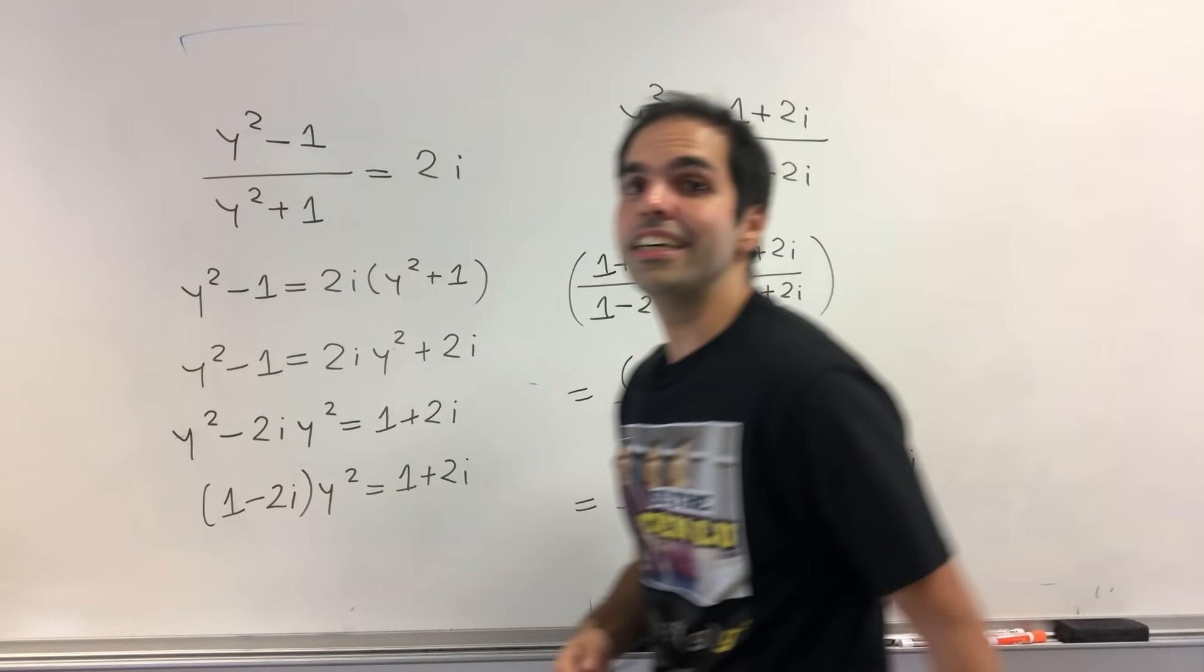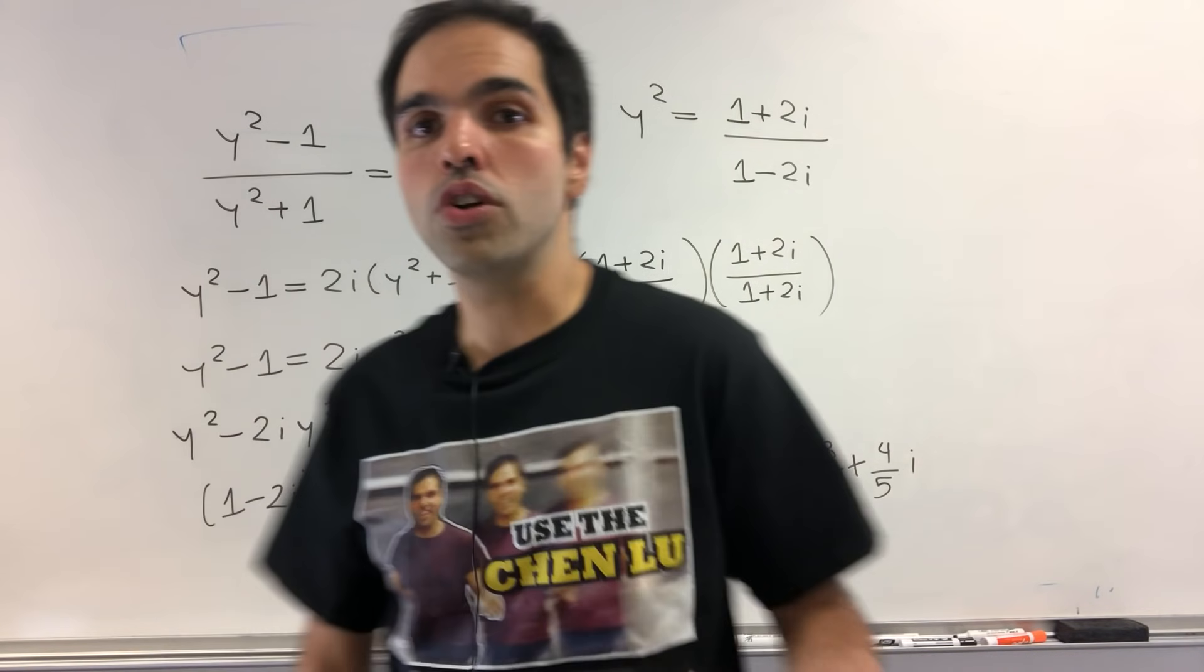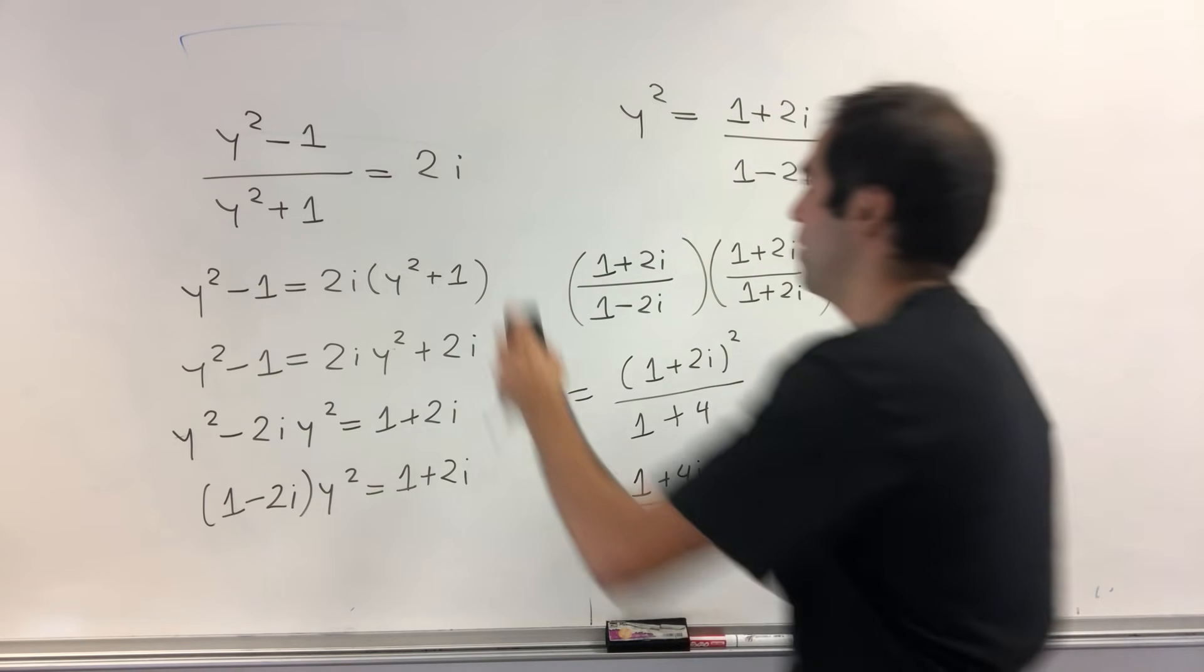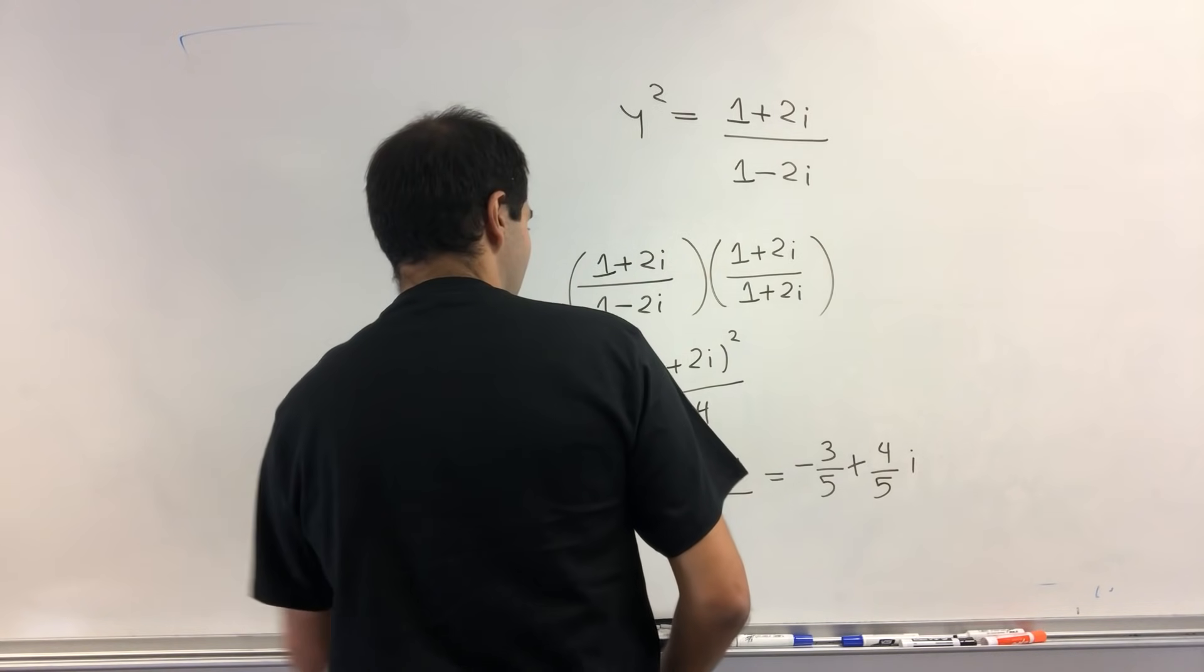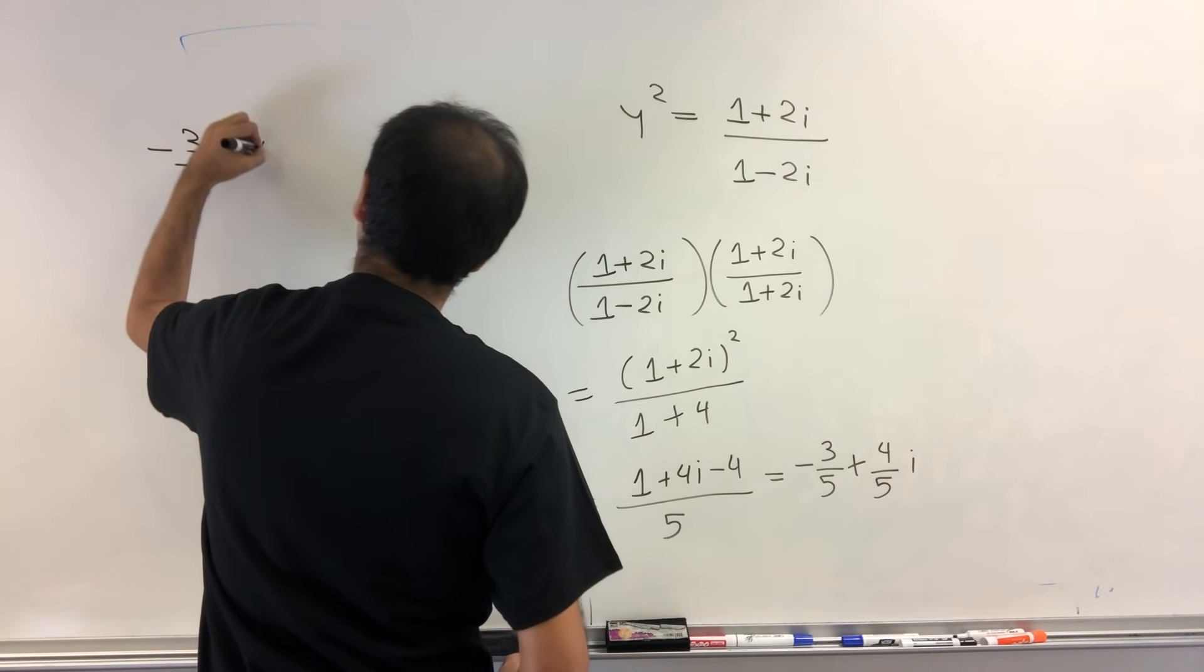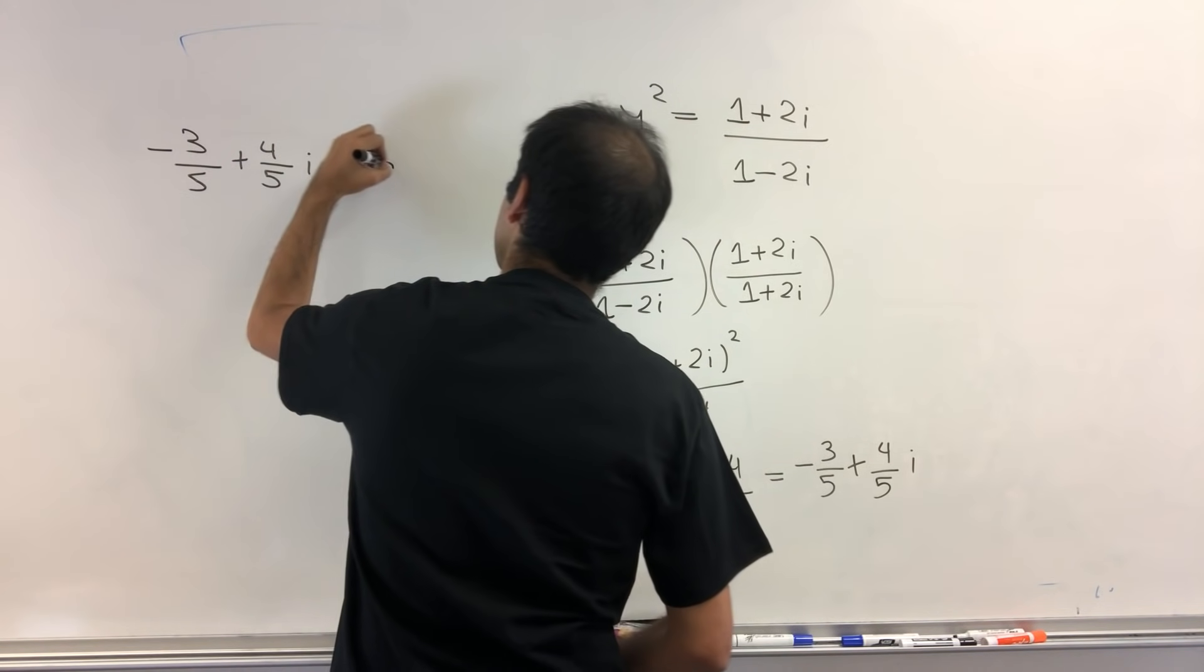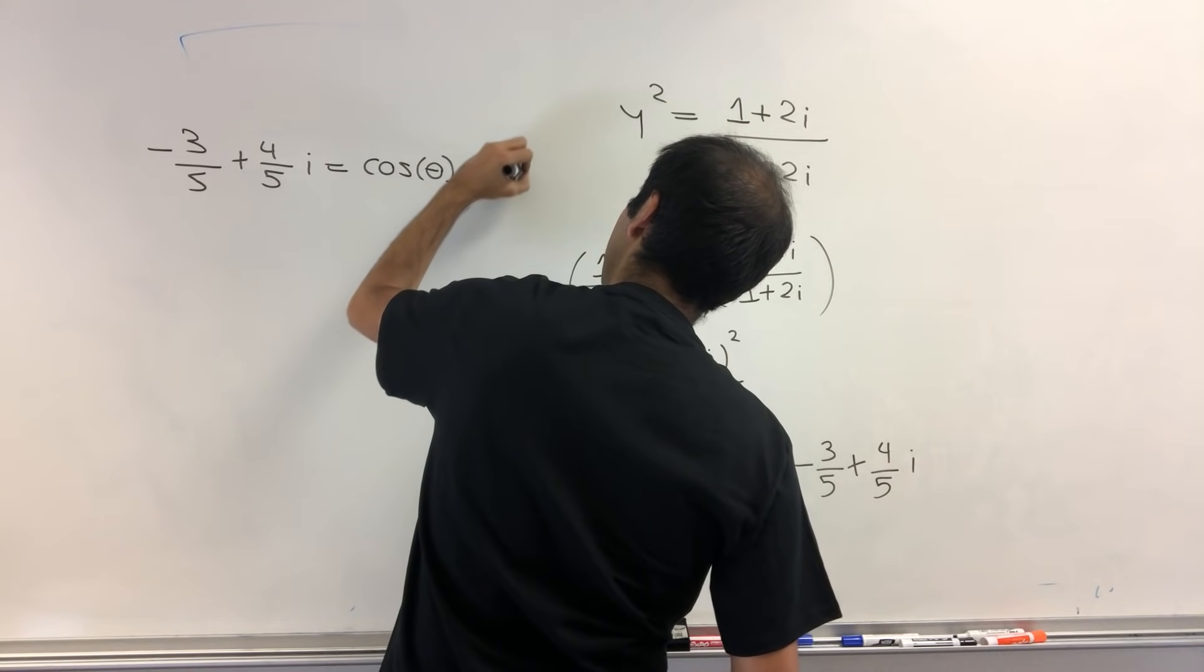Okay, and the idea is, for complex numbers, it's nice to write this in terms of complex exponentials. So in other words, let's try to write this, perhaps, in the form cosine of theta plus i sine of theta. So let's try to write minus 3 fifths plus 4 fifths i somehow equal to cosine of theta plus i sine of theta.